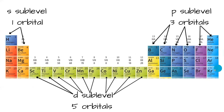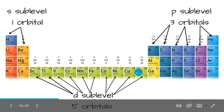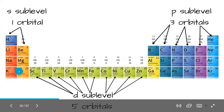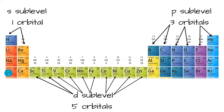So our final 6 electrons are added to the 4p orbitals. Again, it's only the d sublevel that's in the 3rd shell — the s and p orbitals either side of it are still in the 4th shell. So we have 4s2 (2 electrons in the 4th shell s orbital), 3d10 (10 electrons in the 3rd shell d orbital), and 4p6 (6 electrons in the 4th shell p orbital).